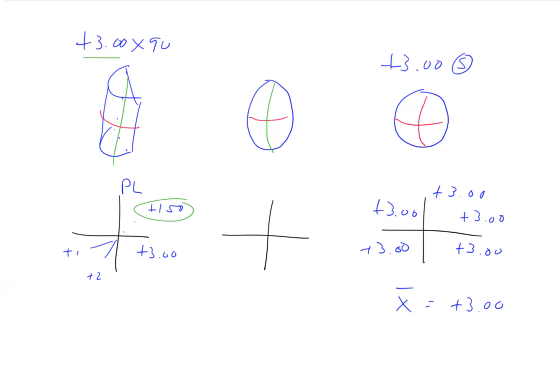Which is half of the value of the maximum power. Maximum power is three. Minimum power is zero. So the average power is going to be plus 1.50.